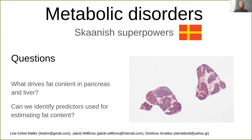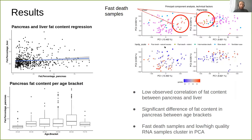Hi everyone, we're Scannish Superpowers and for the Metabolic Disorders Challenge we were given a dataset of fat content in liver and pancreatic tissue along with patient metadata. The questions we set were: what drives fat content in pancreas and liver, and can we identify predictors to make an estimator of fat content in these tissues? We approached this problem from three directions: exploratory data analysis, differential analysis on the RNA-seq data, and building a machine learning model.